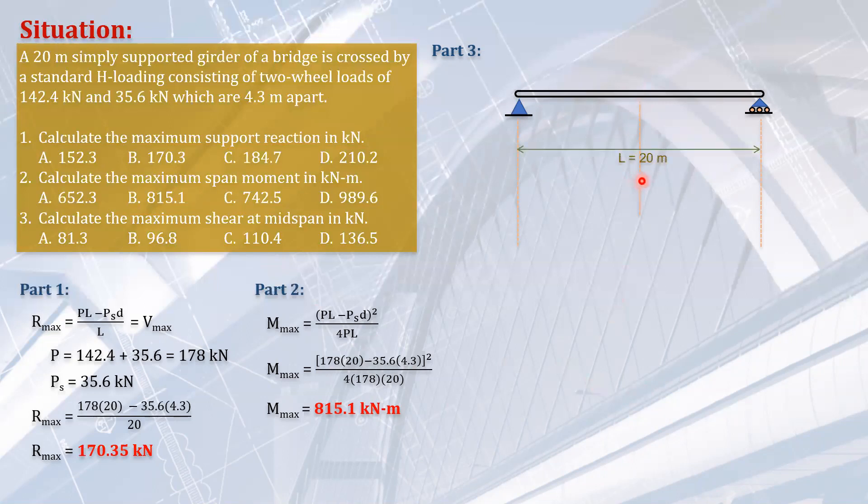So we have to compute the shear at the middle, at the mid span. This is our length, 20 meters. This will be, of course, 10 meters. Now, this will be your A and that will be your B. 10 meters is 10 and 10.